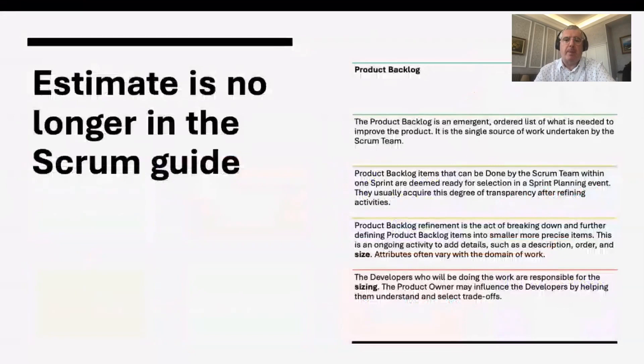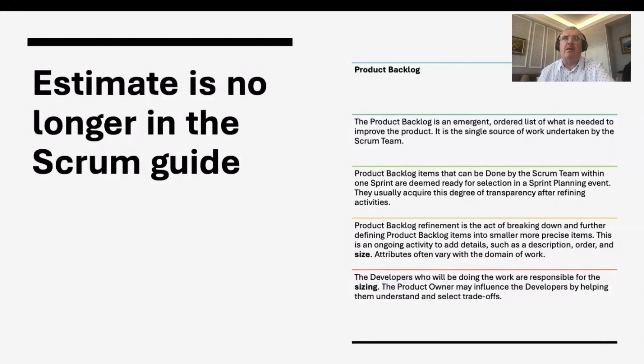Looking at the Scrum Guide — this talk is primarily about sizing and forecasting in Scrum. The word 'estimate' is no longer featured in the Scrum Guide. In 2020, there was a change to focus more on sizing. This may be influenced by the Kanban Guide for Scrum Teams and its flow metrics. There's a new focus on throughput — how many items are we finishing — as an option to consider.